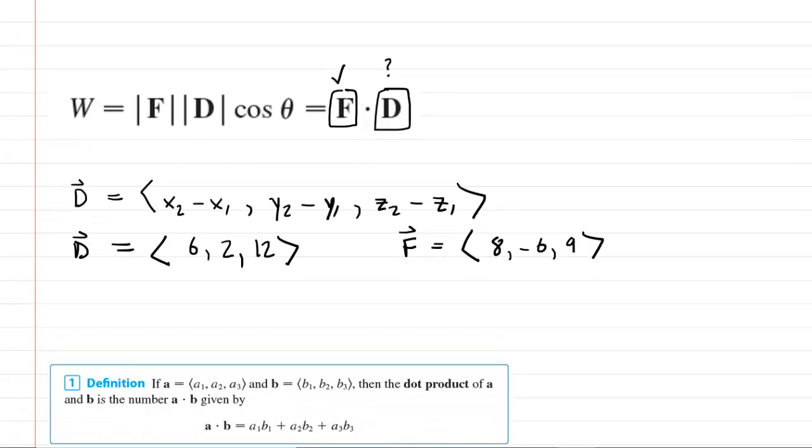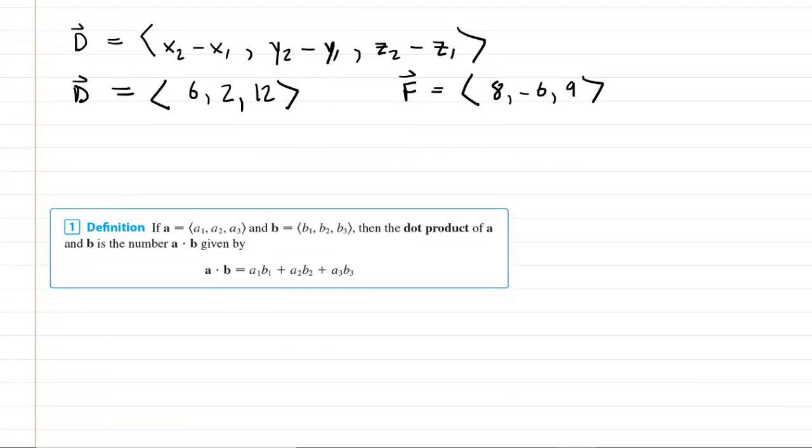So now it's time for us to actually do the dot product. Recall that the work is the dot product between the force vector and the displacement vector. We may need to remind ourselves about how to do a dot product. In this case, the definition is using two vectors labeled a and b. Basically what you're going to do is take the product of the x coordinates, y coordinates, and z coordinates, and then just add them together.